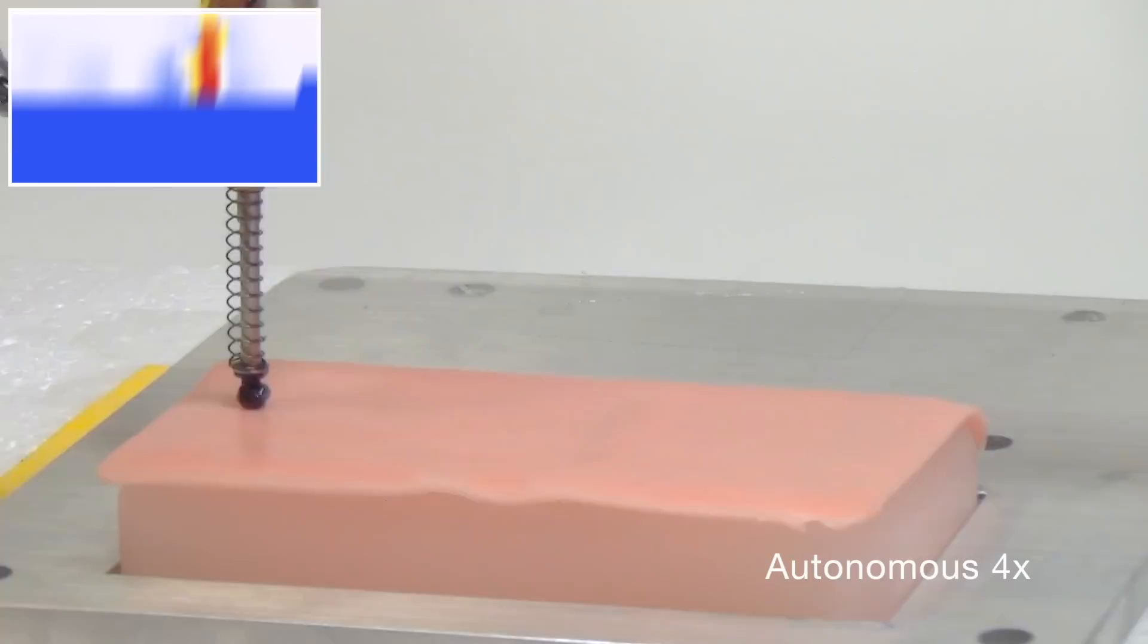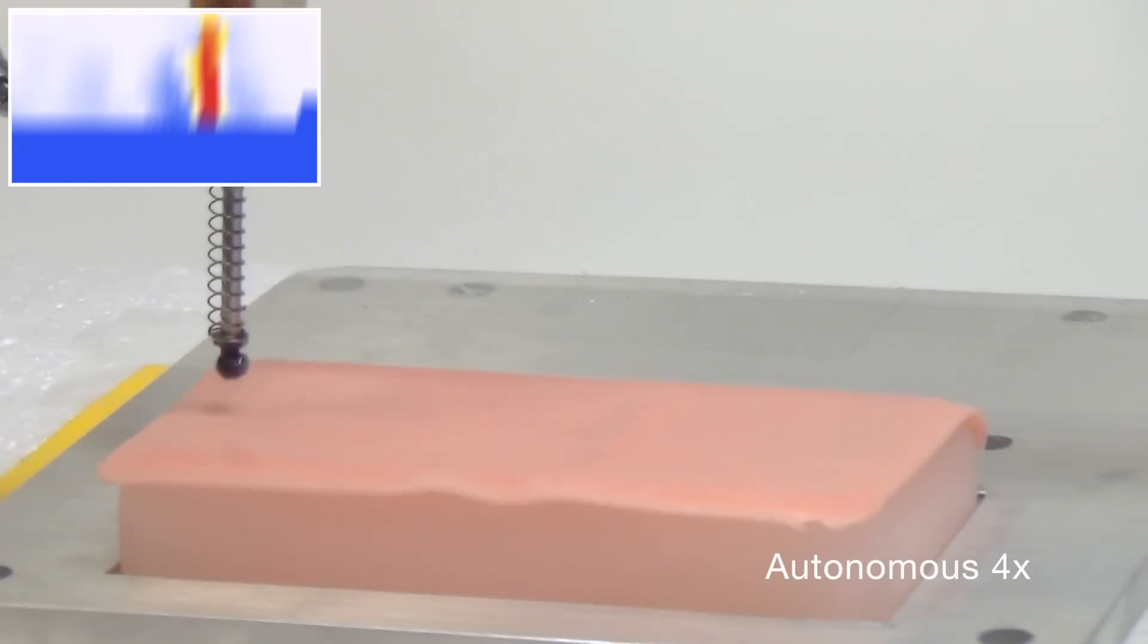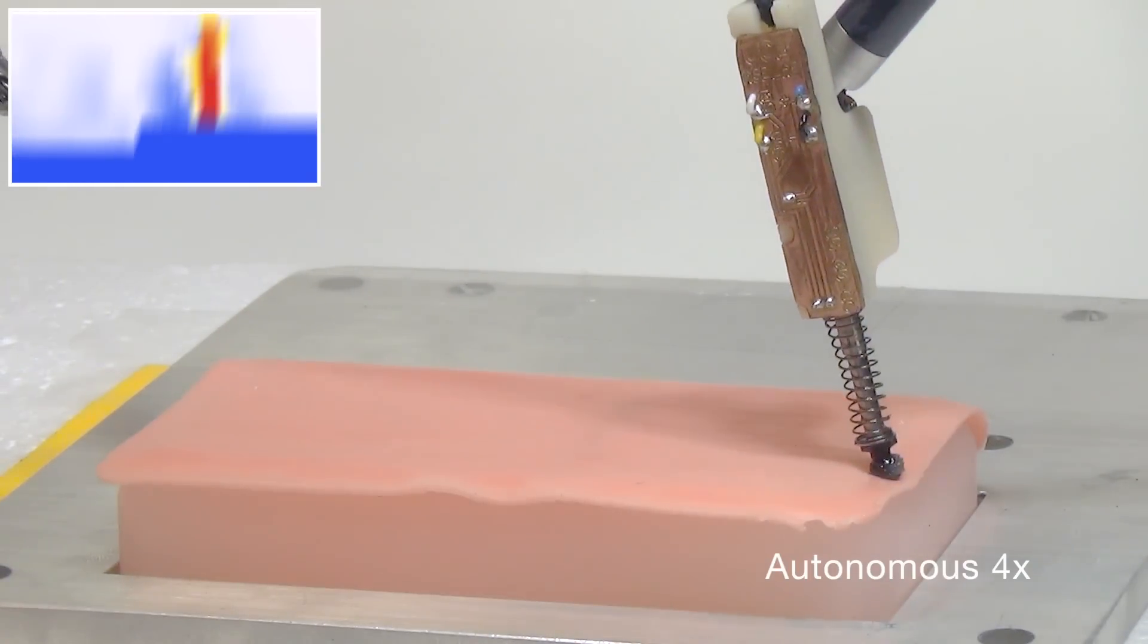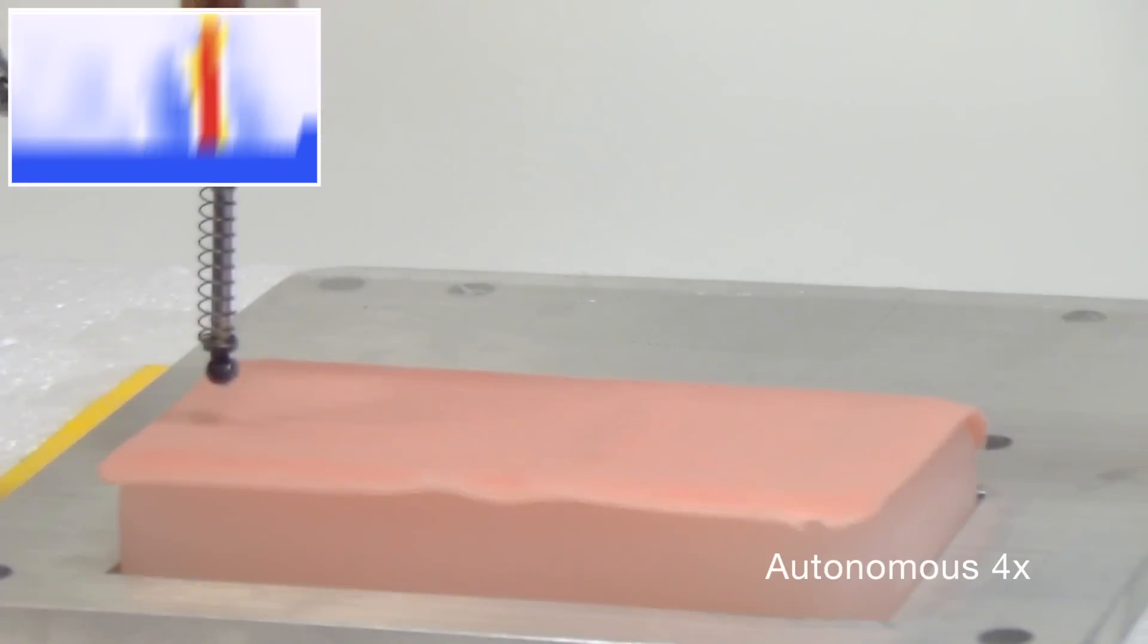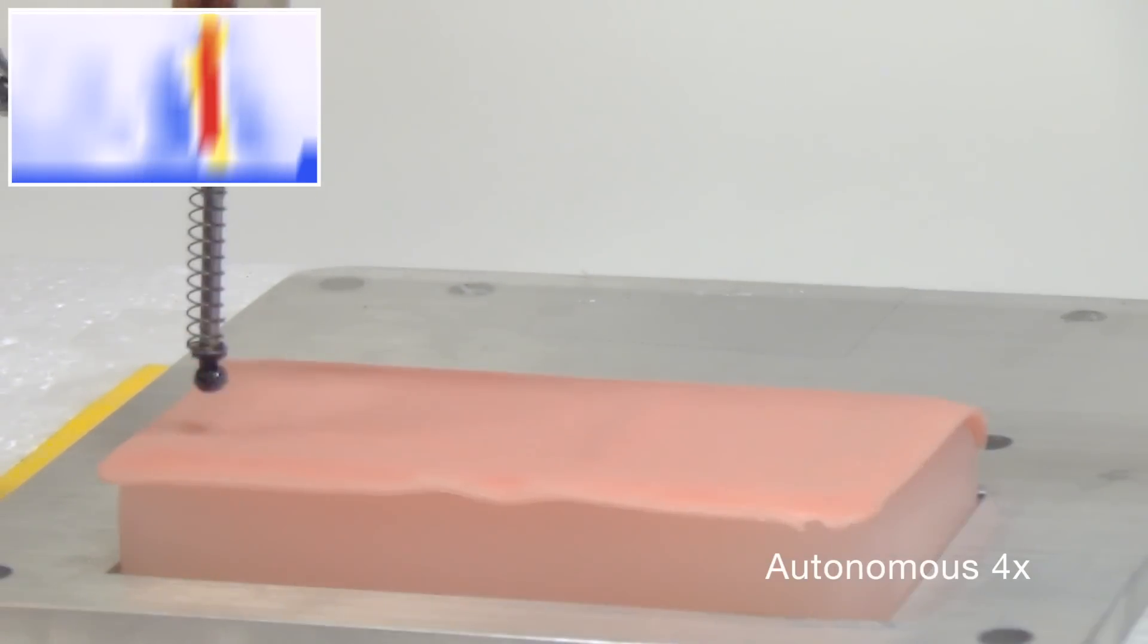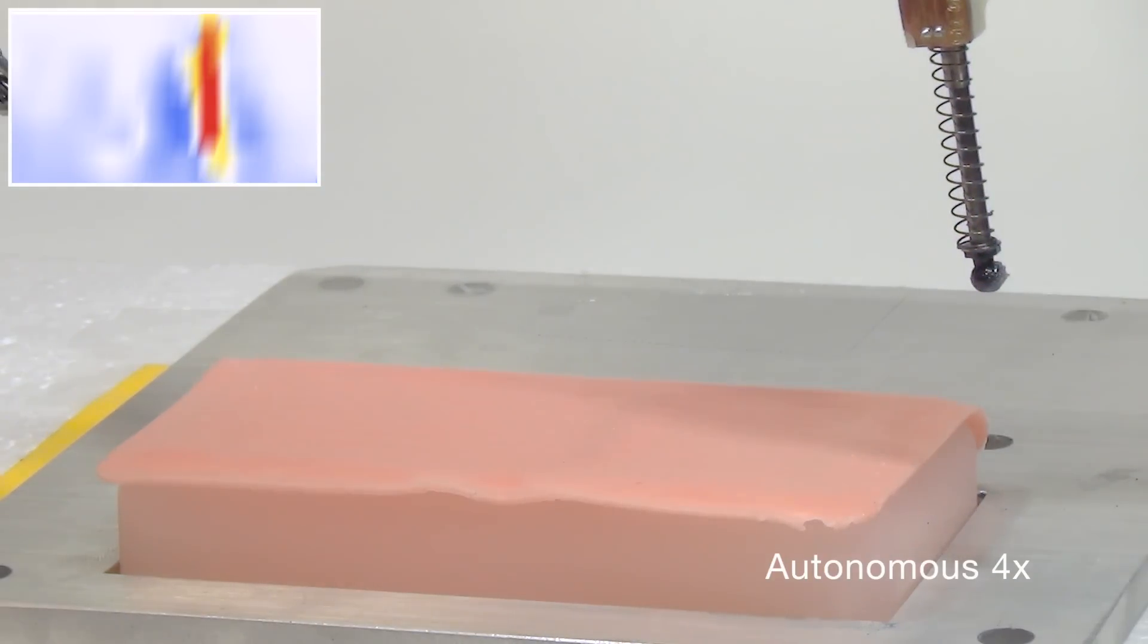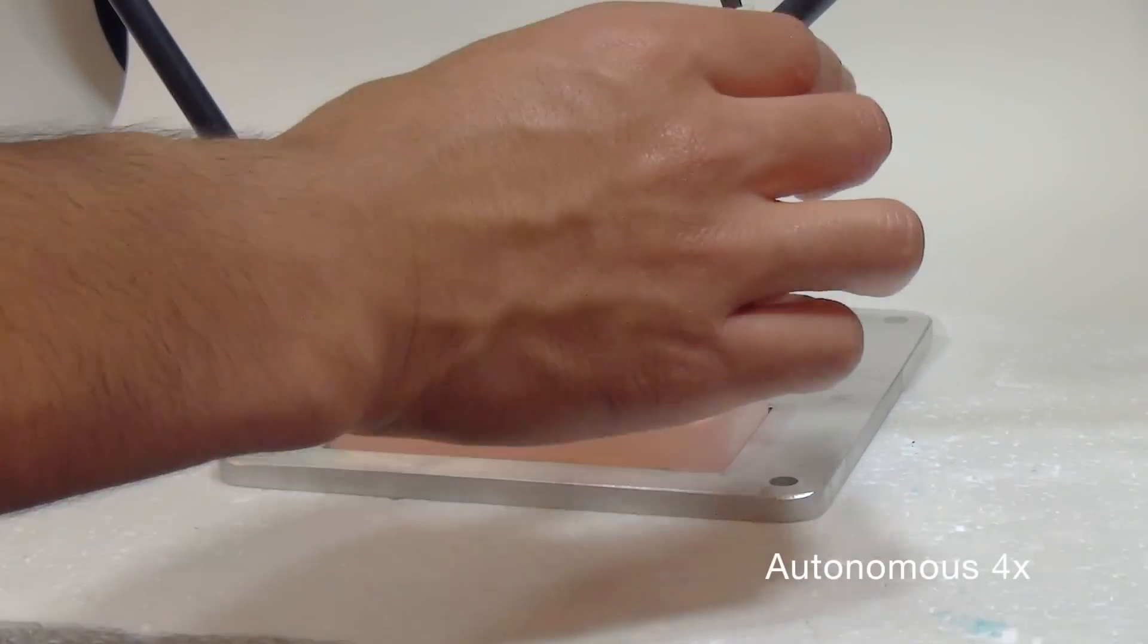The first step is tumor localization. We designed and implemented a low-cost, single-use palpation probe that fits on the end of a standard DaVinci Classic tool. It uses a Hall effect sensing mechanism to localize subcutaneous tumors based on end-effector displacement. Here we see the probe scanning the surface with eight parallel passes to estimate the tumor location.